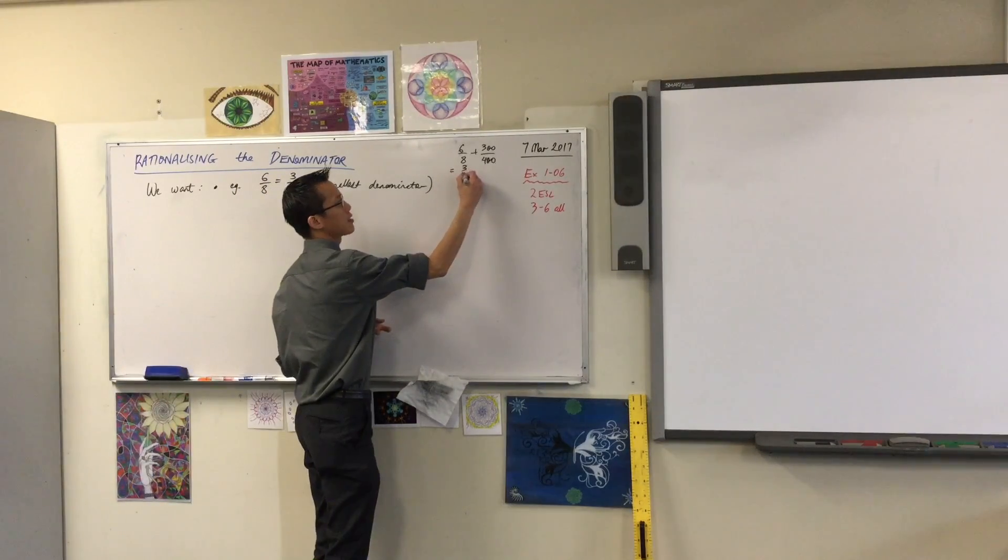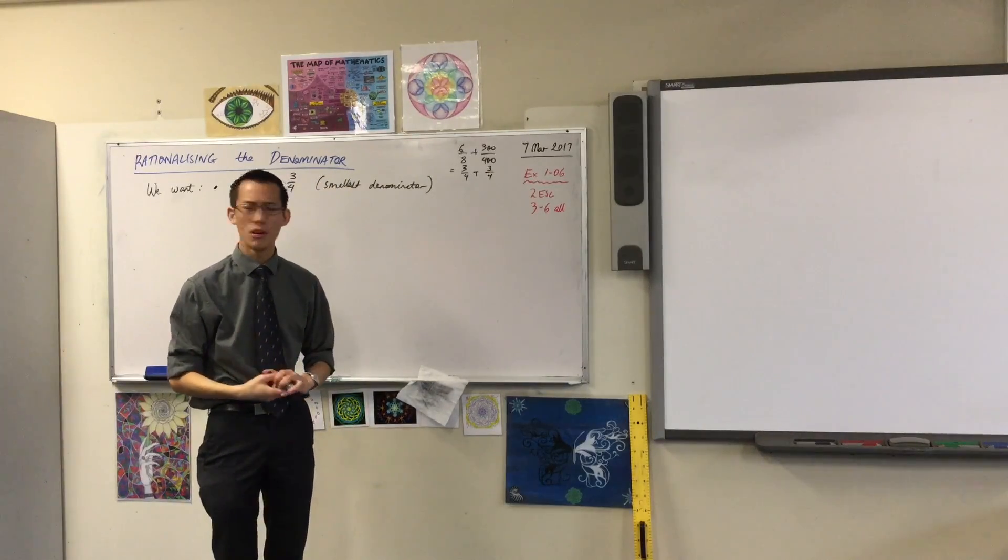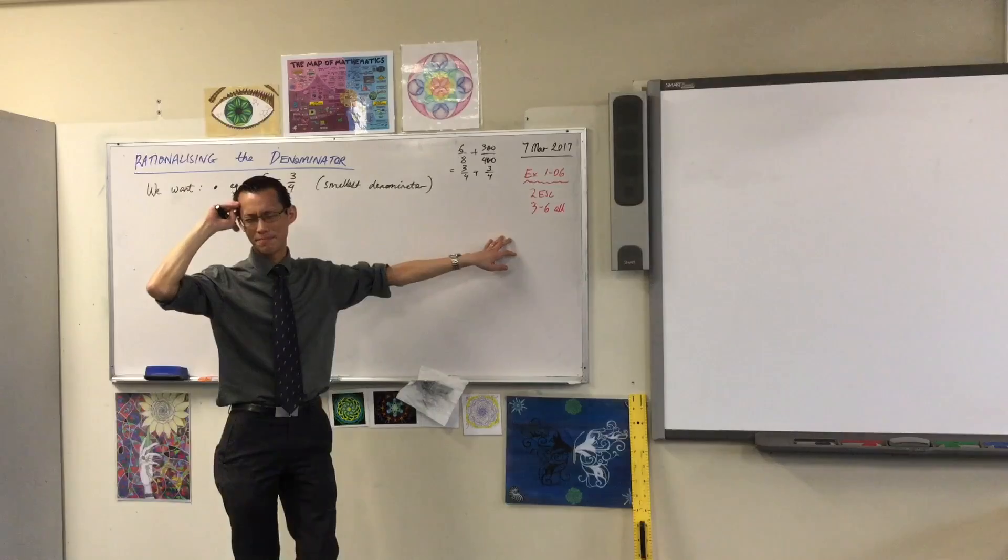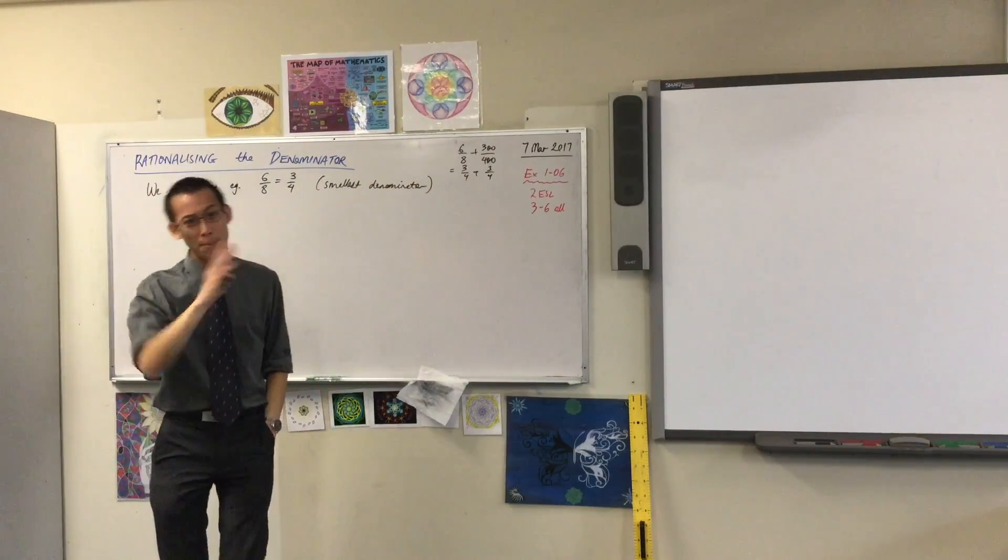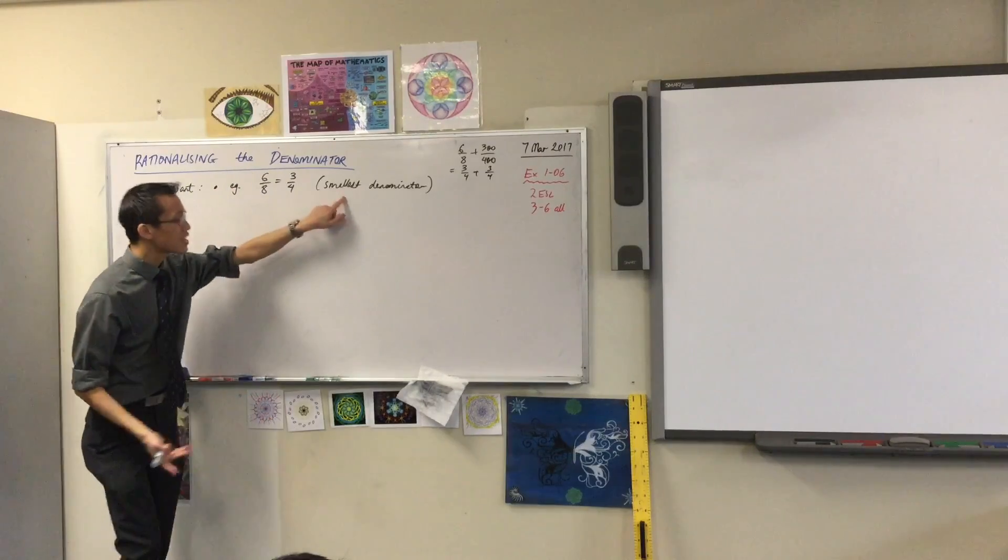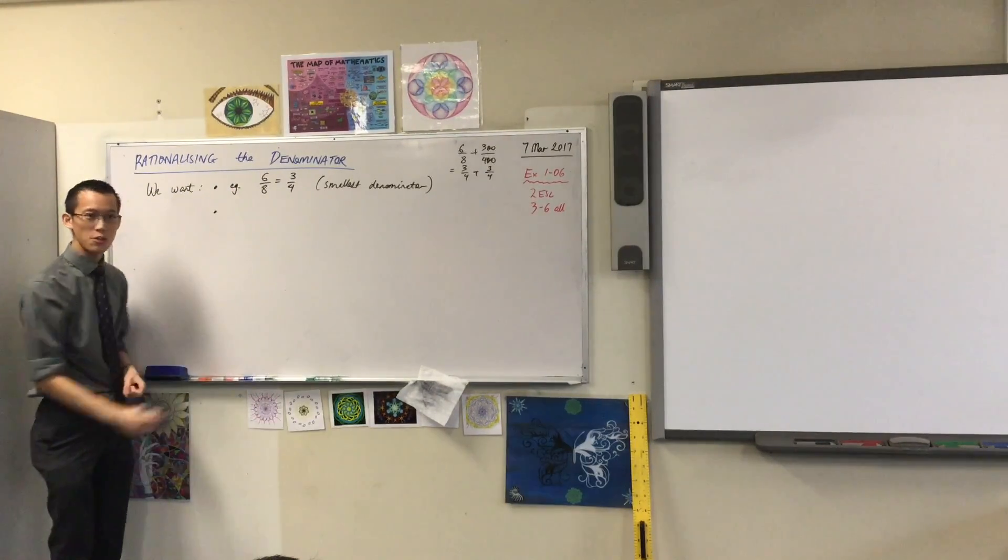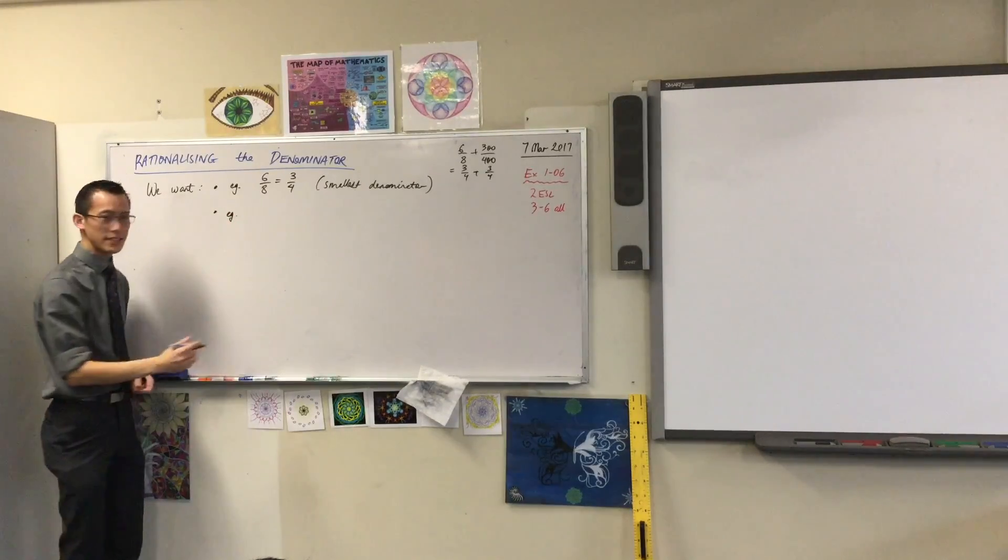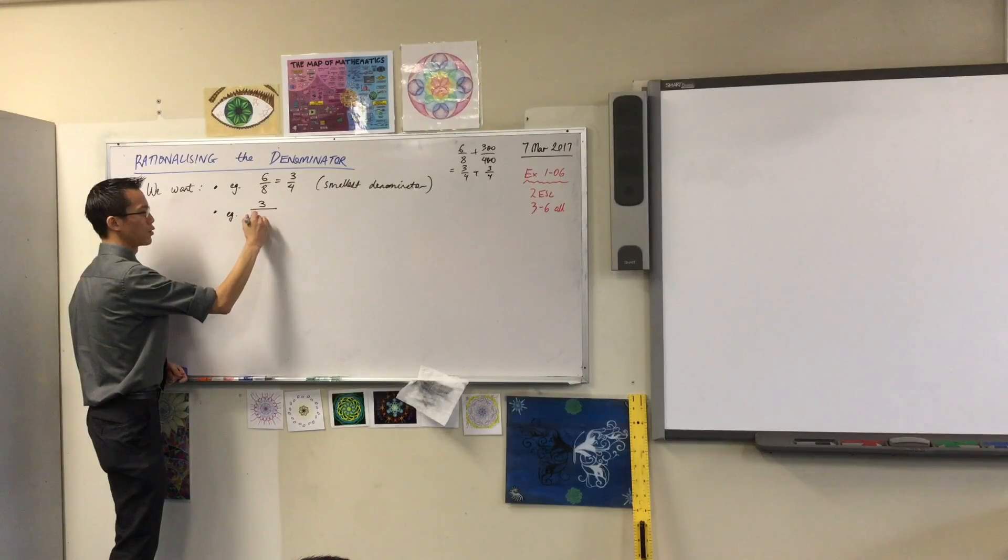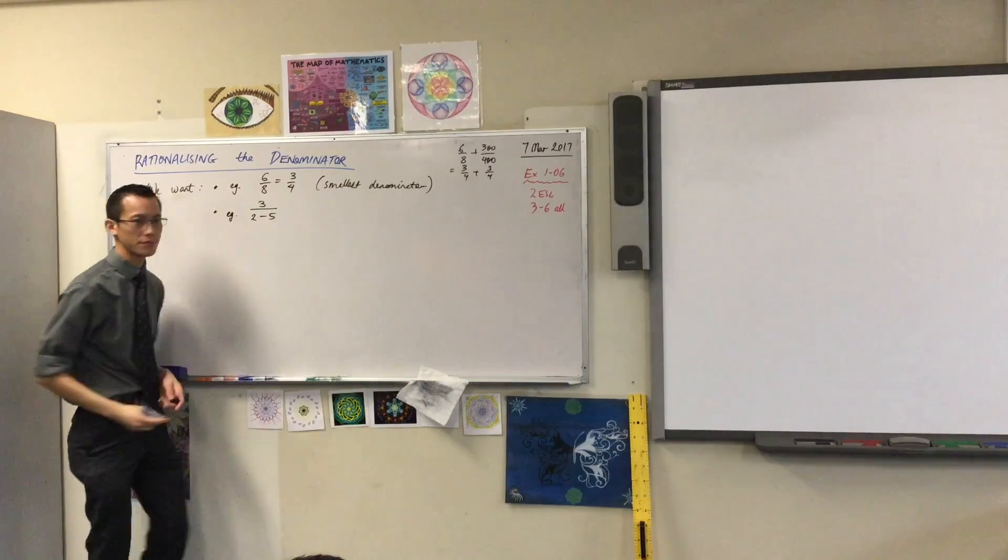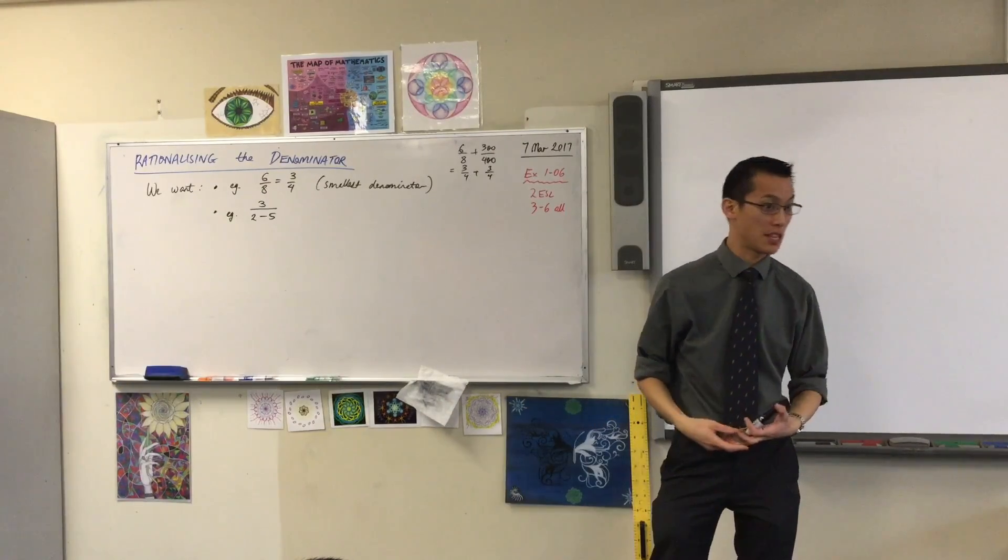The numbers get bigger and bigger, and it becomes more and more confusing. That's why smaller denominators are better. Something else that you might have seen before, not very common, but if I said to you, here's a fraction now: 3 over 2 take away 5. Can you tell me what's that equal to? Can you tell me at least what the next step is? This denominator, I can combine those terms, can't I? So that's going to be 3 over negative 3, which in turn is negative 1.